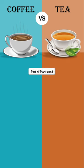Point 1: part of the plants. Coffee is a bean, and tea is a leaf.